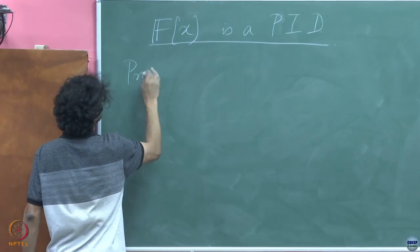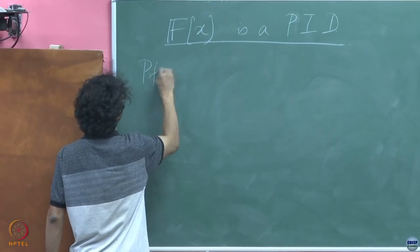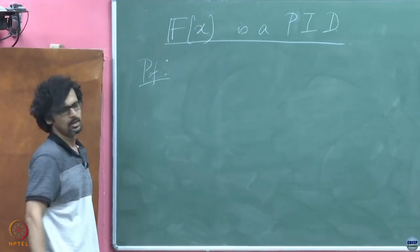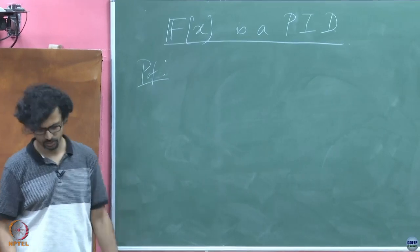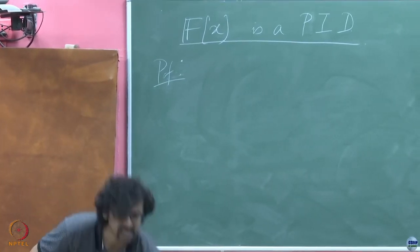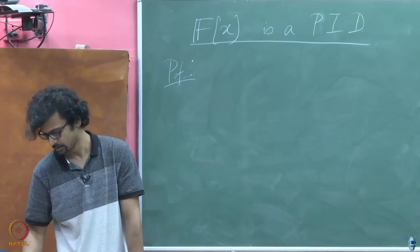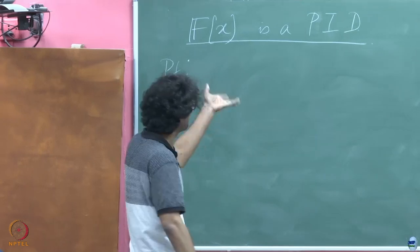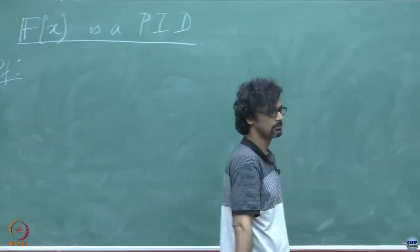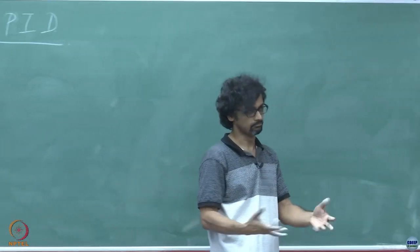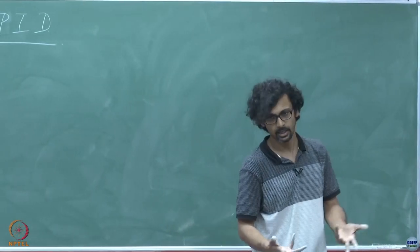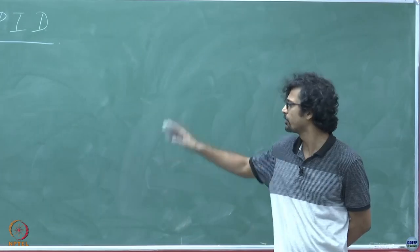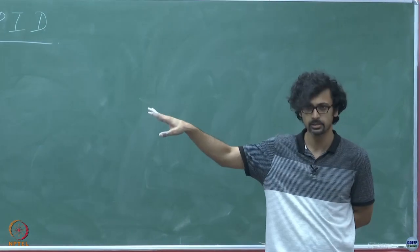Now we will look at a proof of this. If I put this through to you, what is your best guess for a potential generator of any ideal in the commutative ring of polynomials?